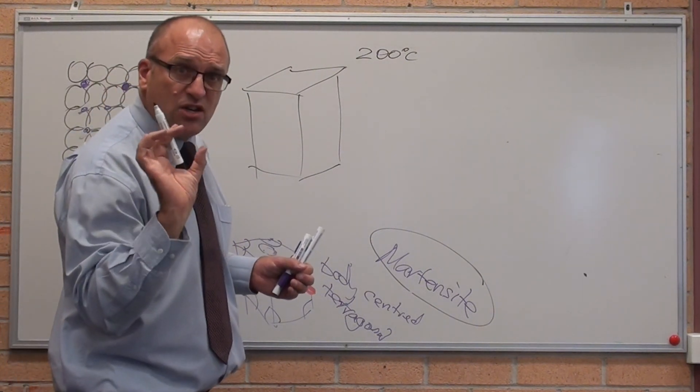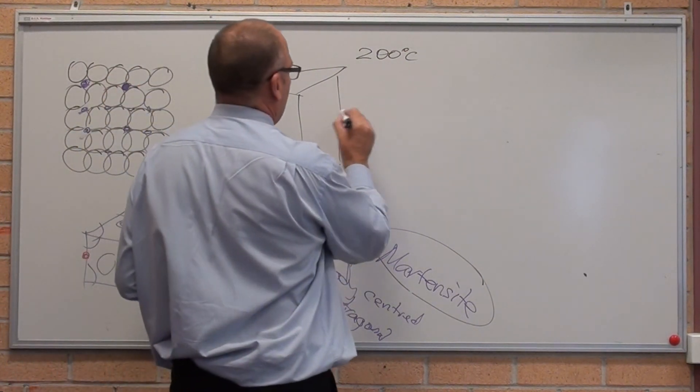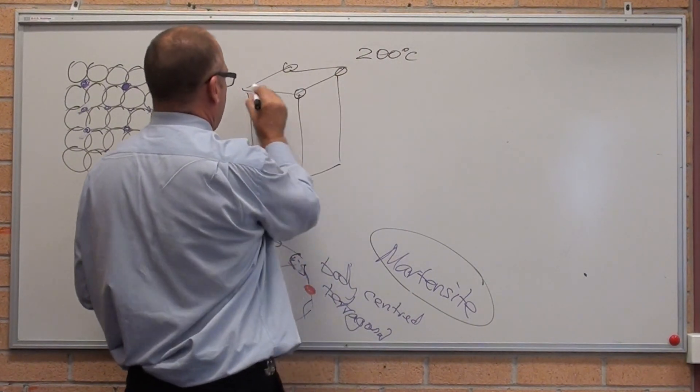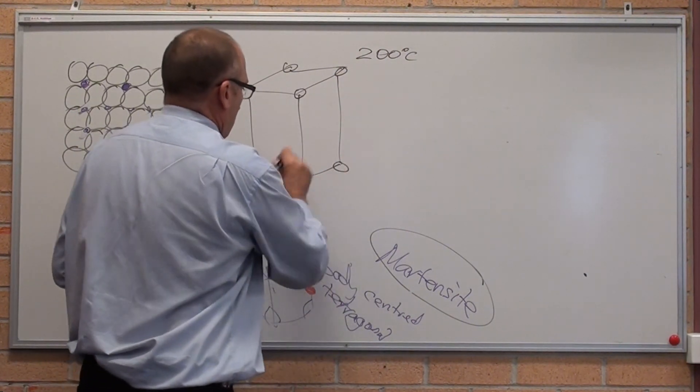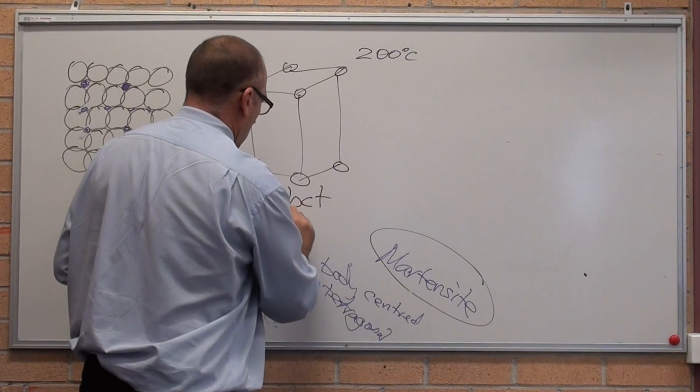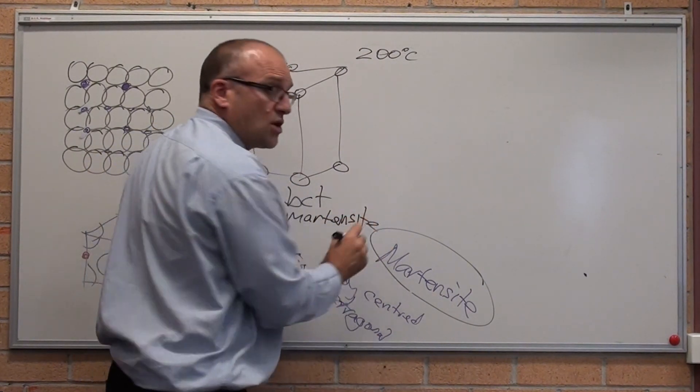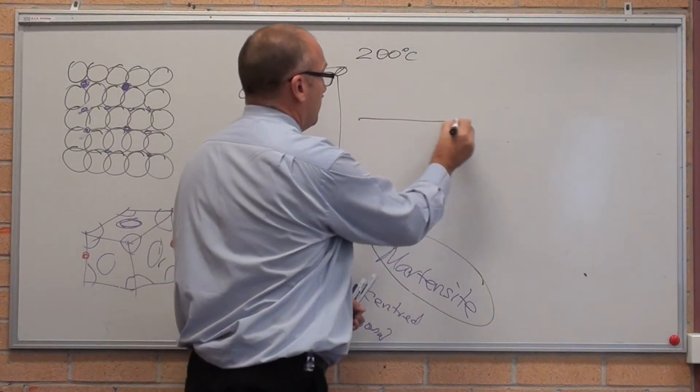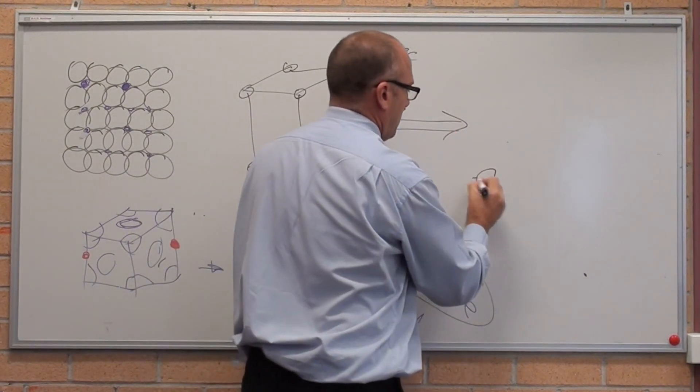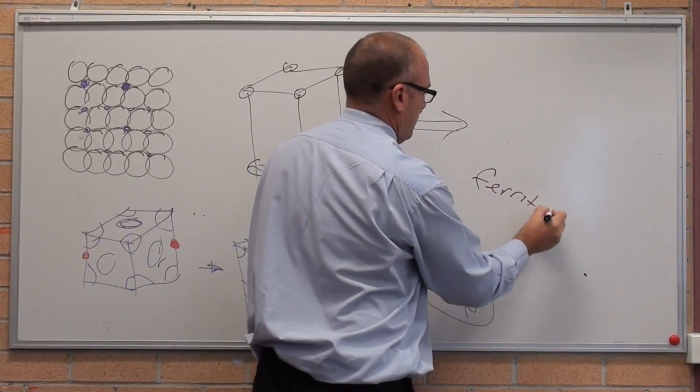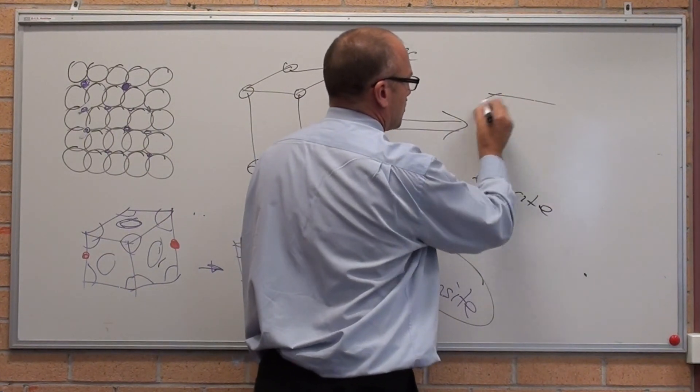That body-centred tetragonal martensite now has got enough heat energy to transform into ferrite. So it makes, I'll just draw it in as a cube.